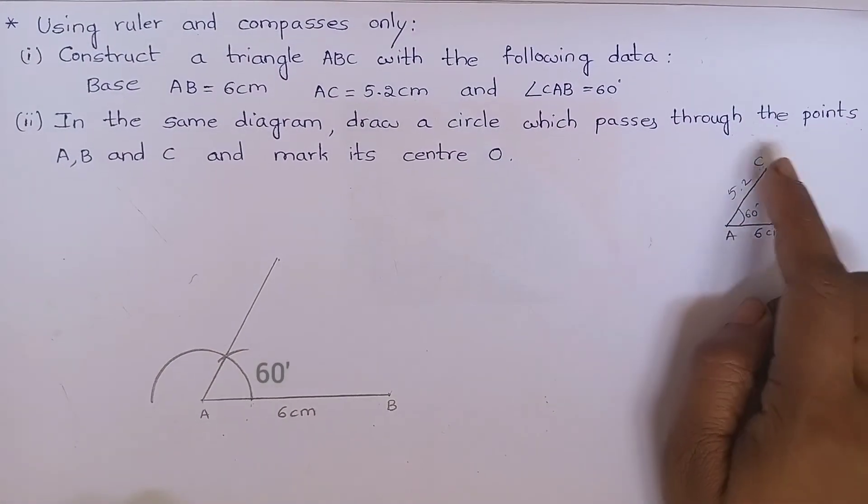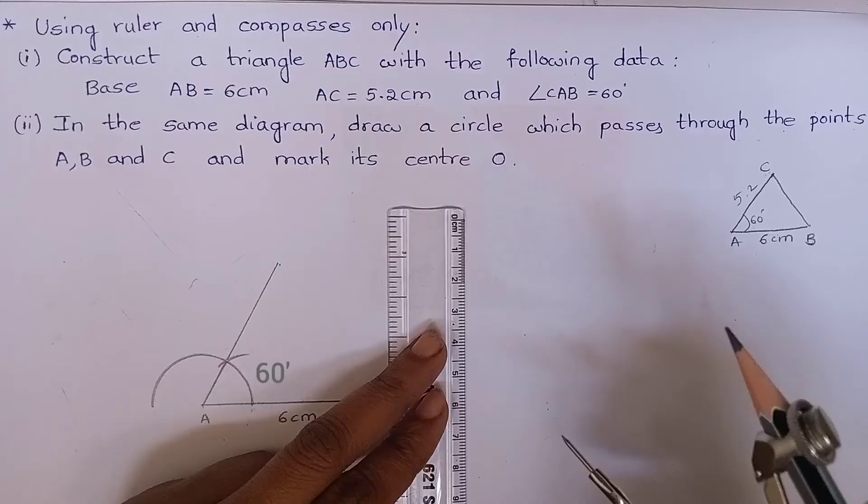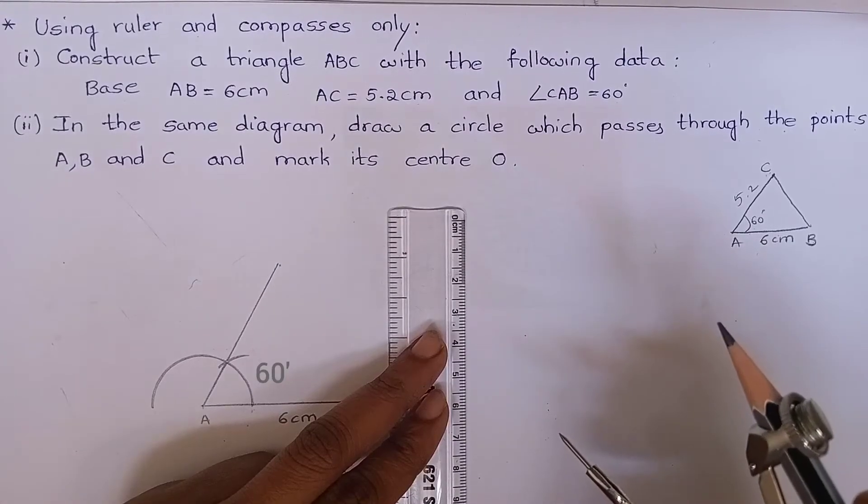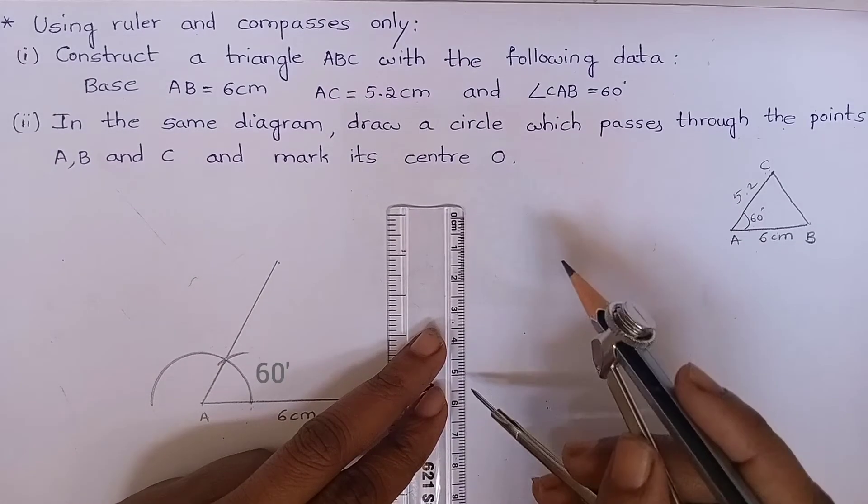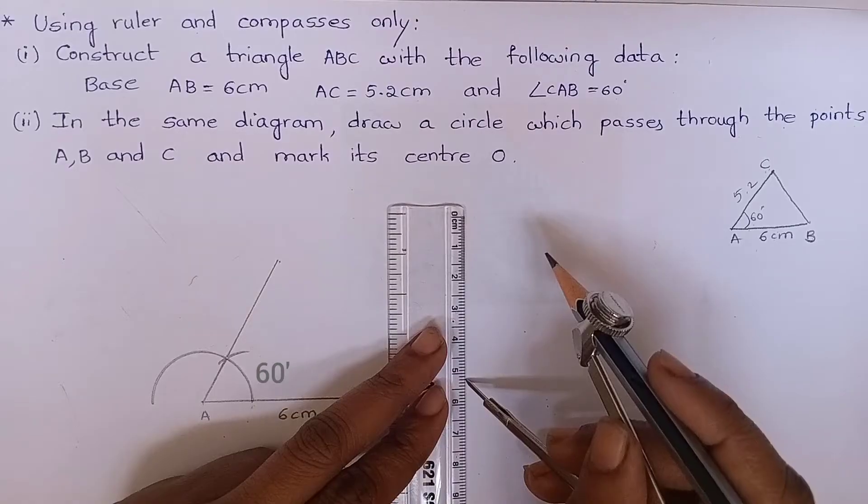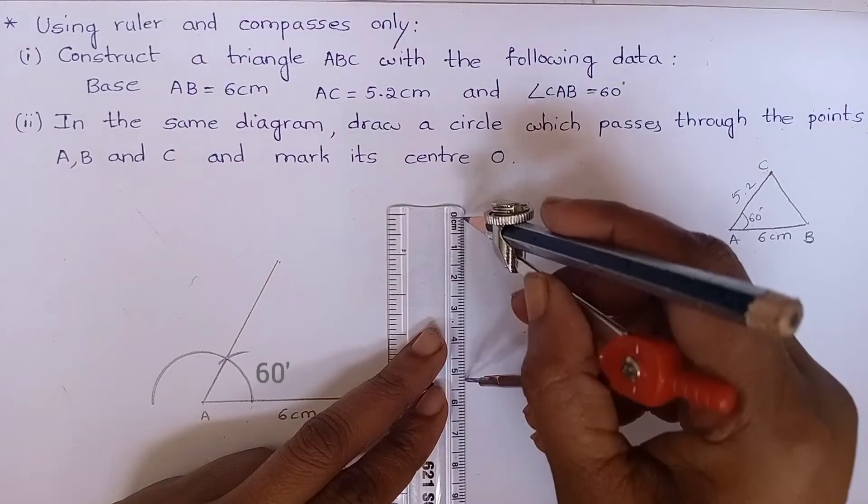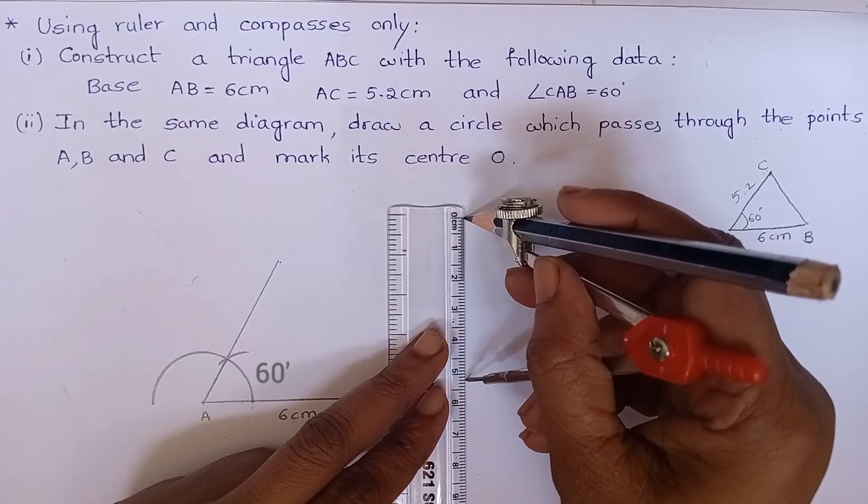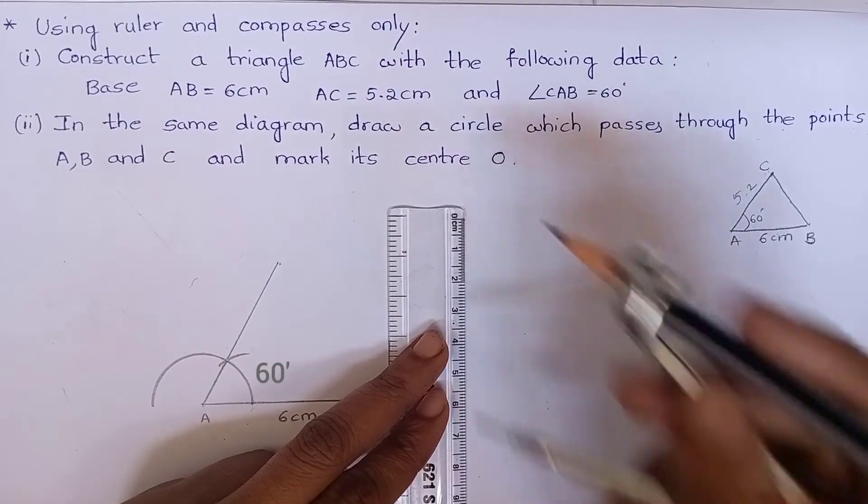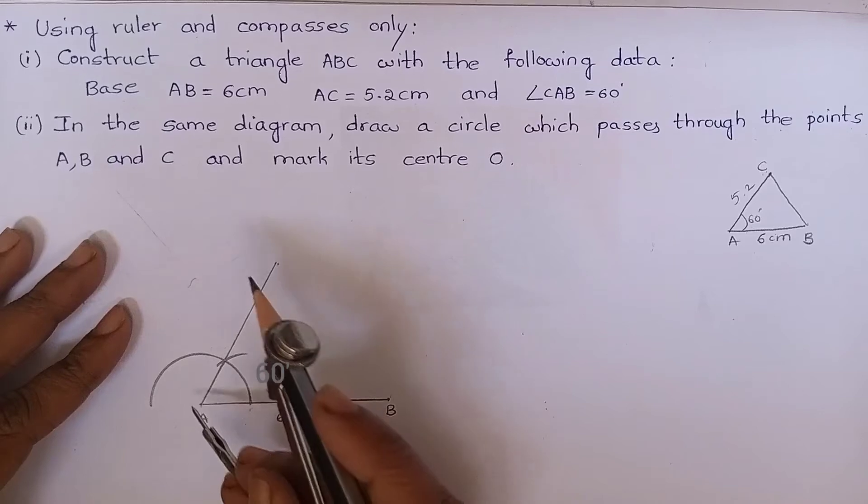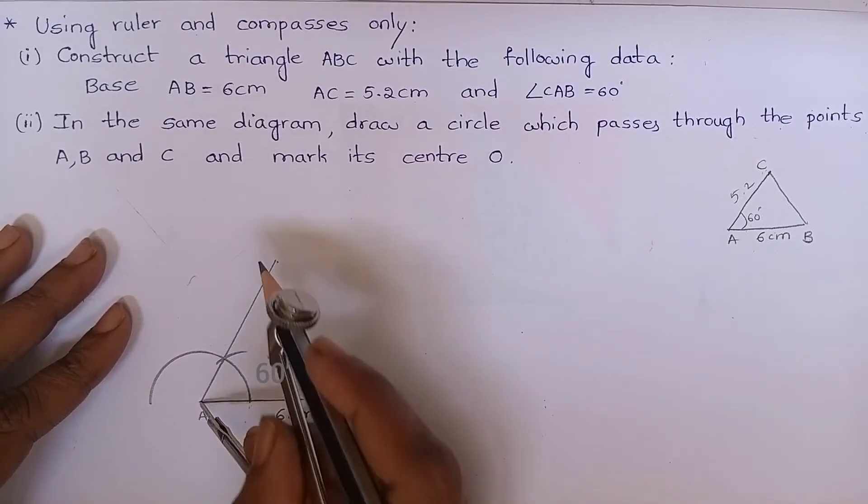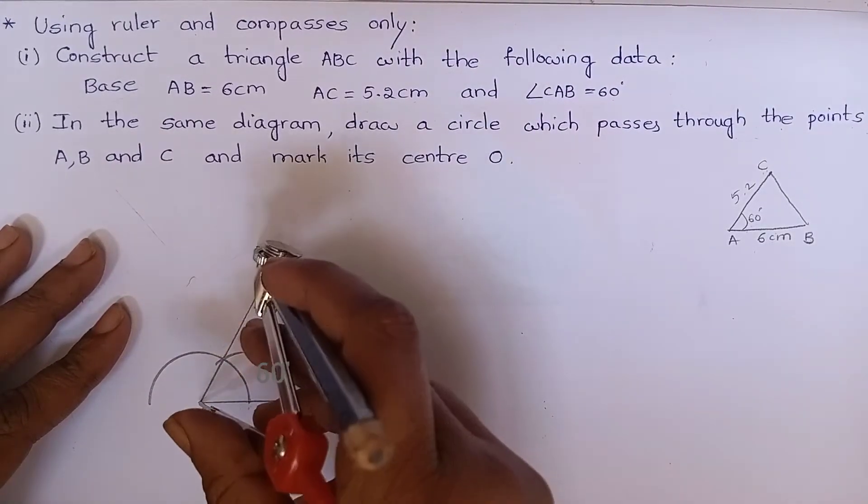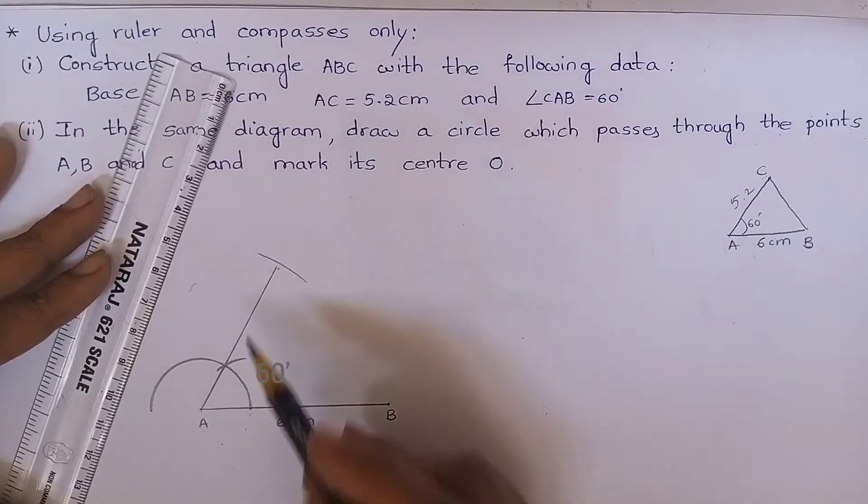And AC is 5.2 centimeters. Measure 5.2 centimeters using ruler. You can see that it is 5.2 centimeters. Keeping the compass at point A, cut an arc. Produce this line.